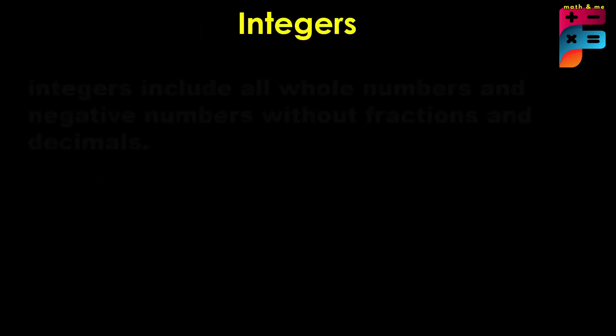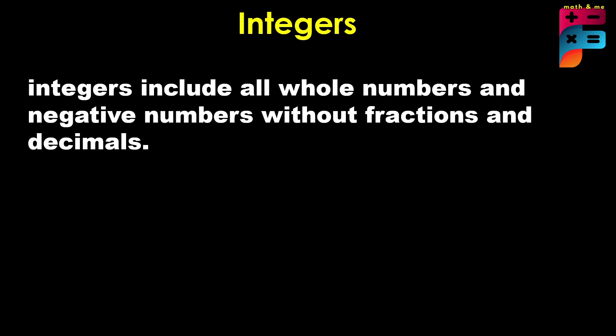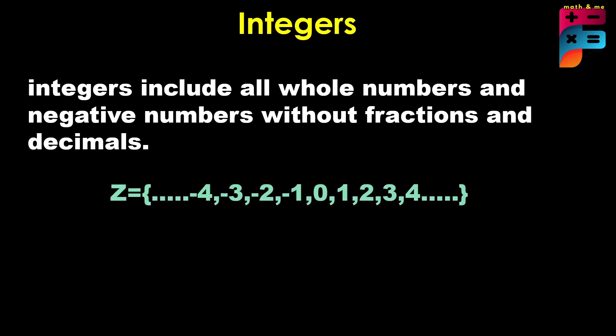Integers. Integers include all whole numbers and negative numbers, without fractions or decimals. They range from negative infinity to positive infinity, including 0, but no fractions or decimals.